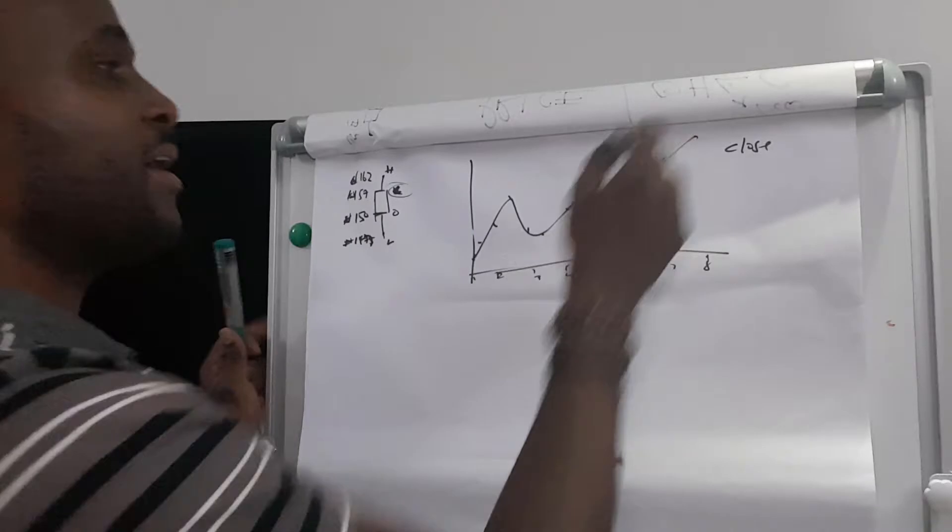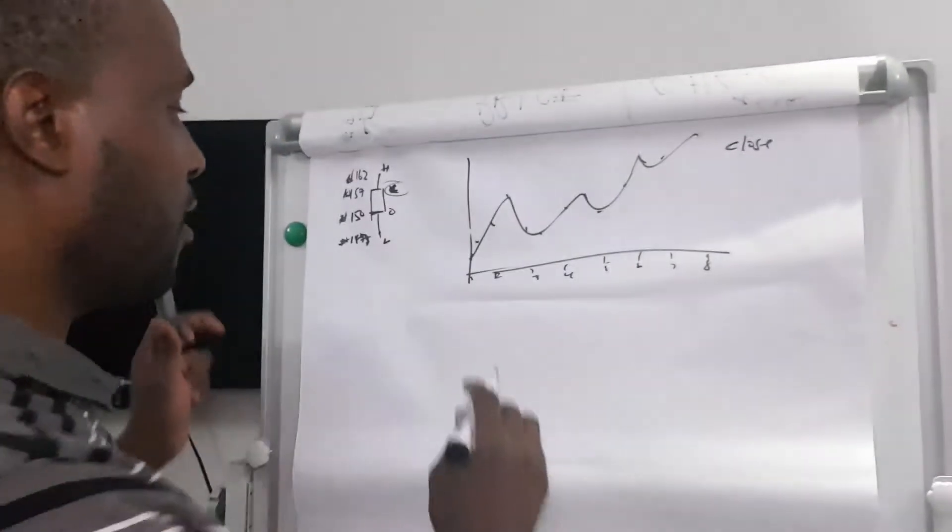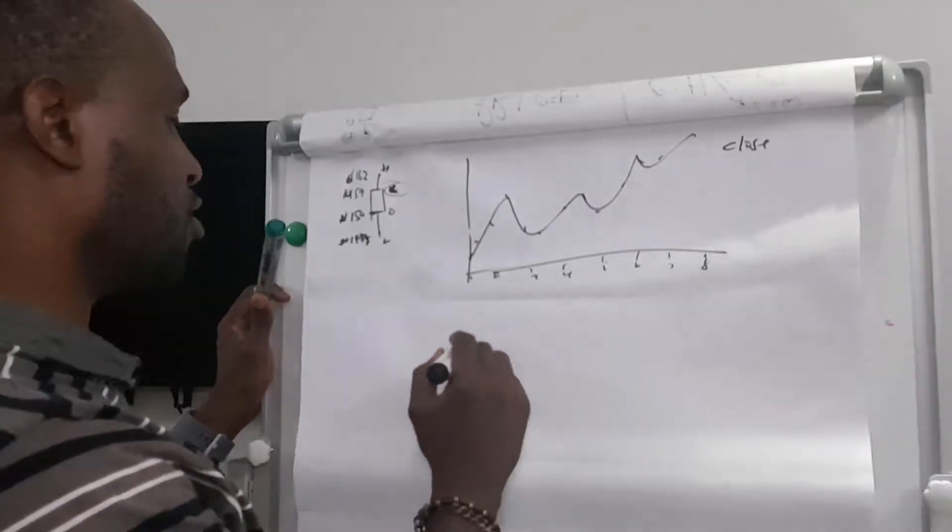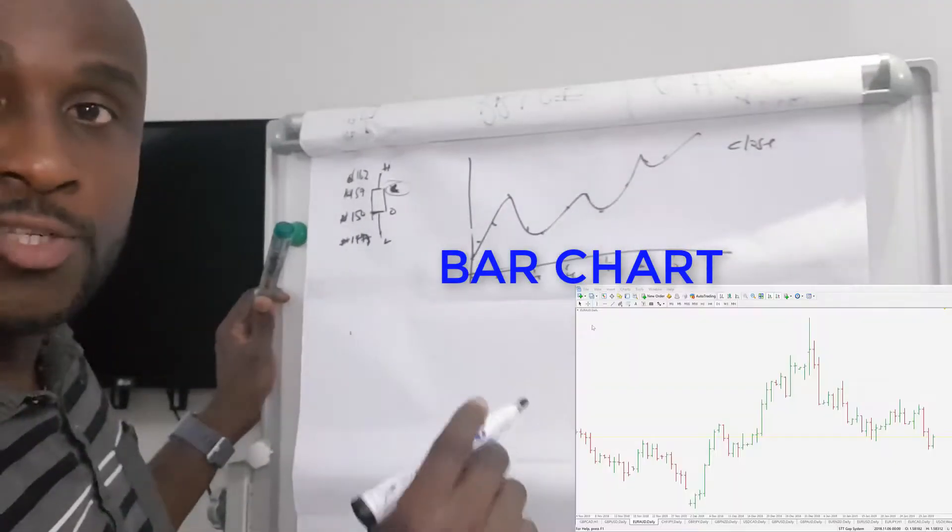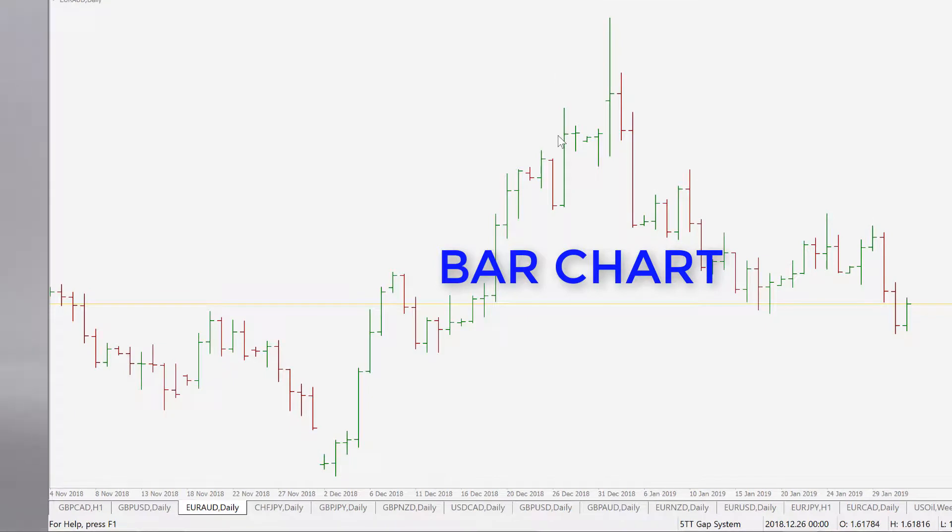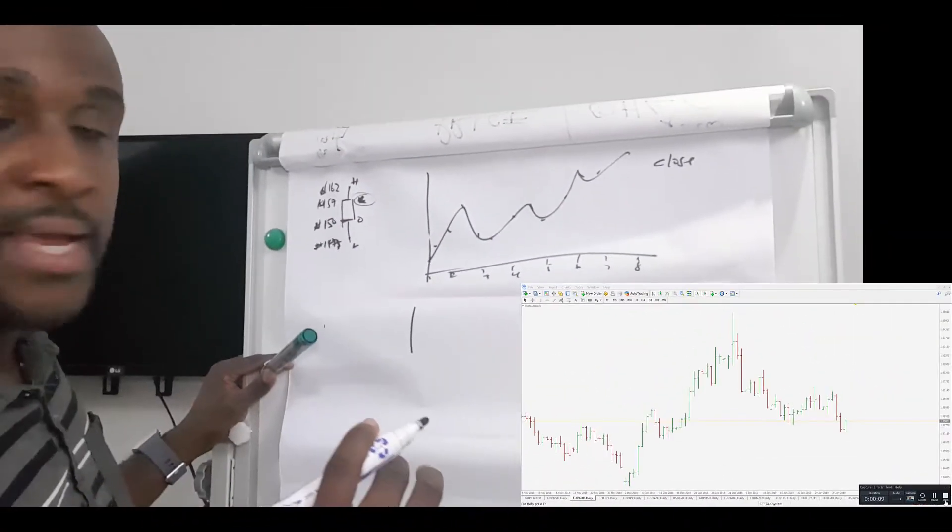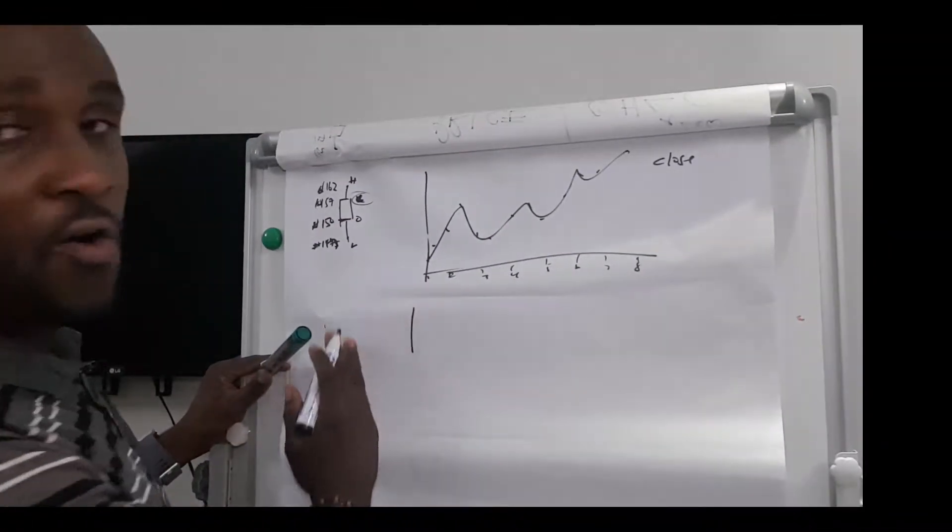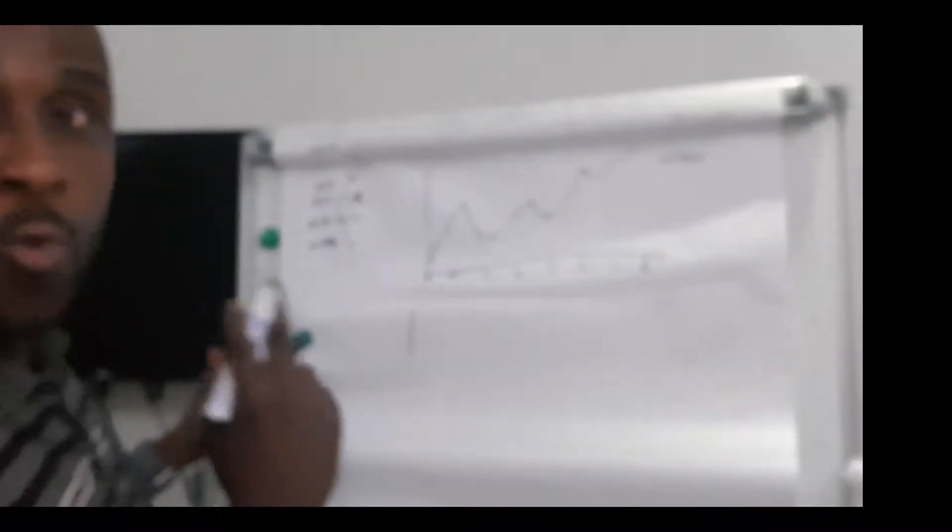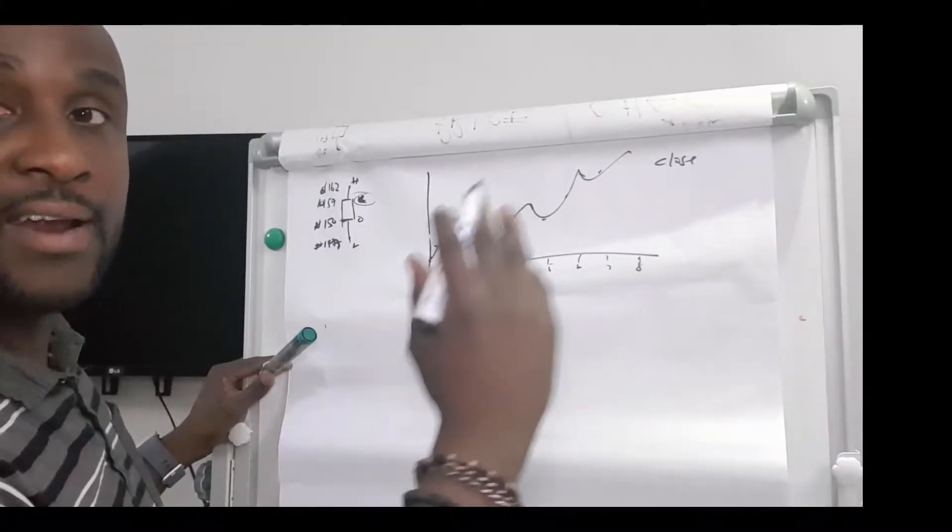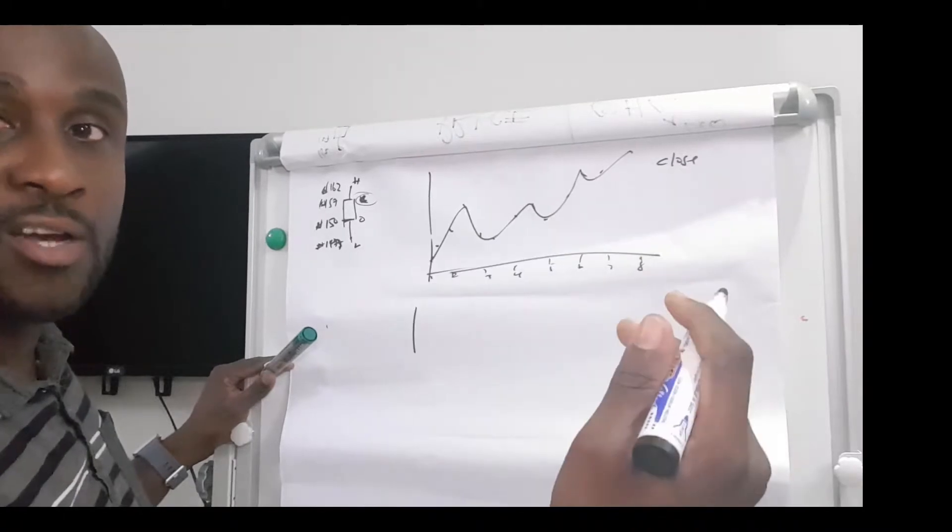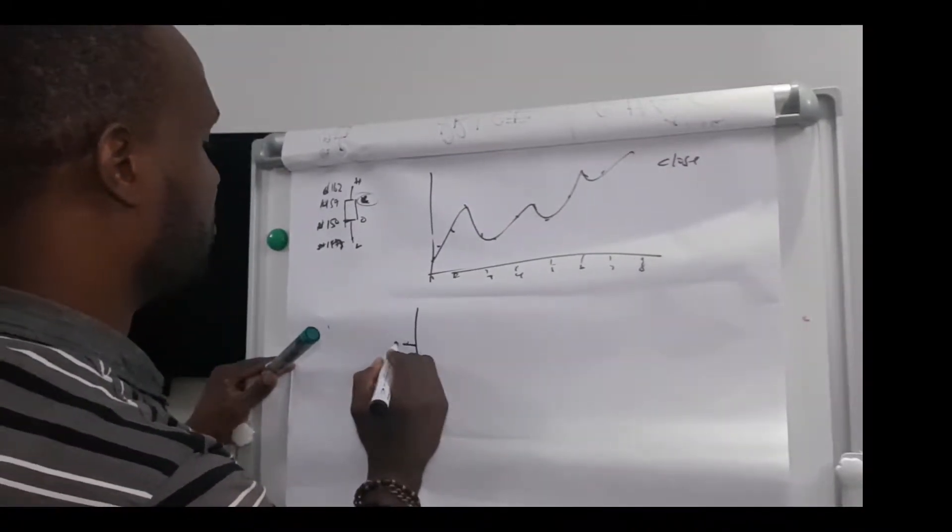In trading as well, we have what is called bar charts. Bar charts look like a vertical stick with two horizontal lines either side. On the left-hand side of the bar is always the open price, and on the right-hand side of the bar is always the close price.